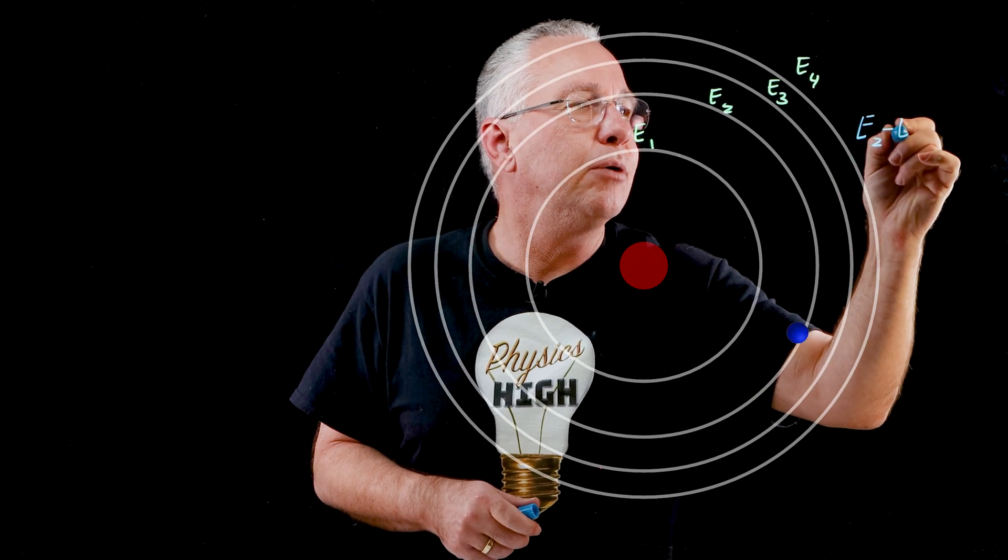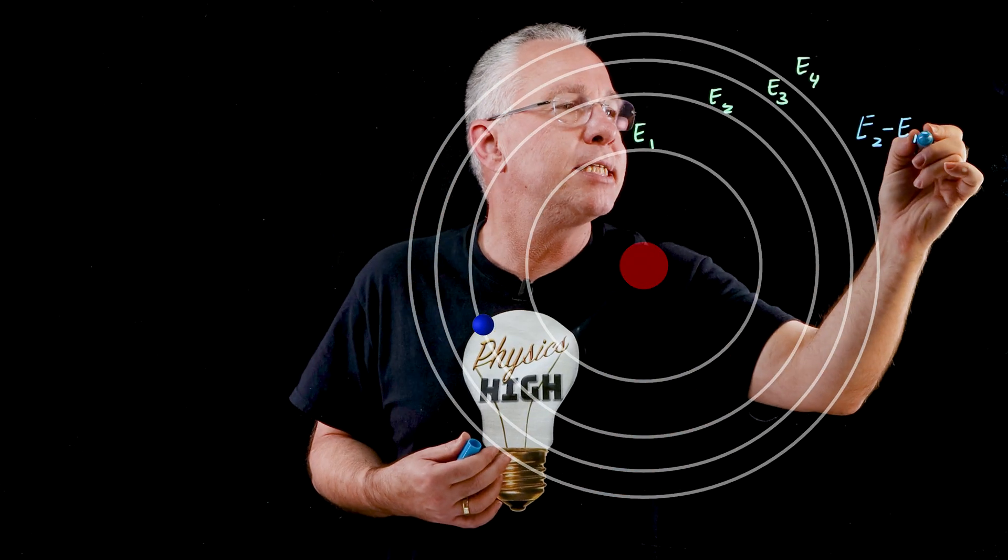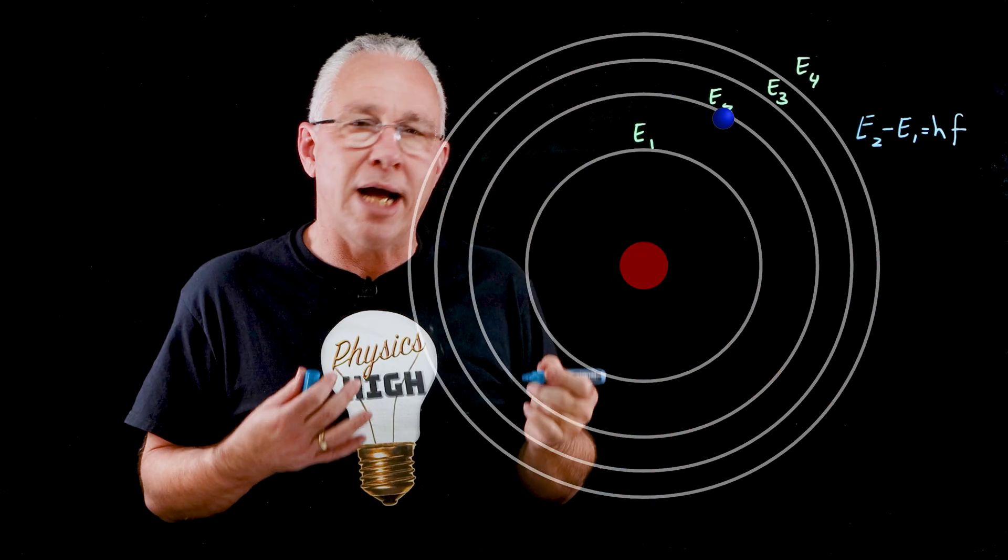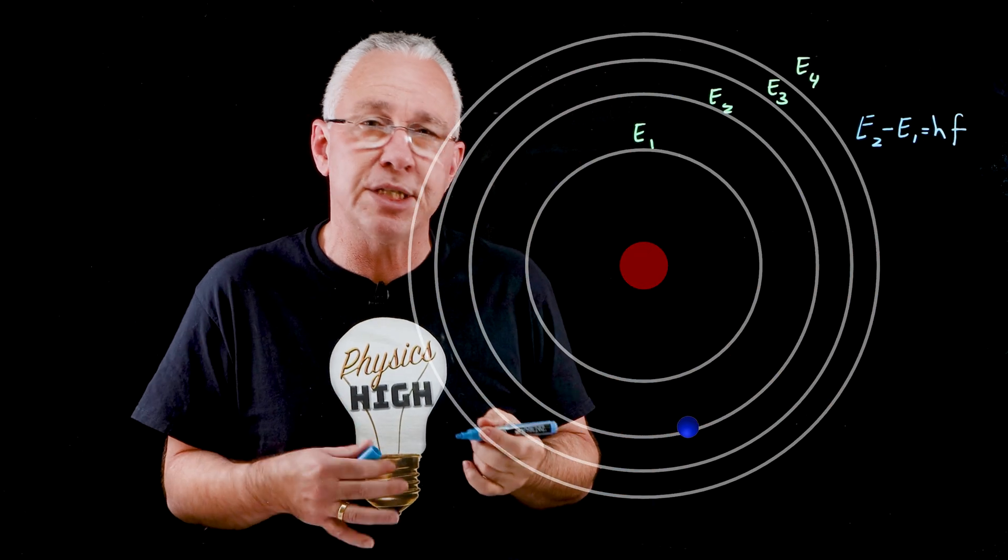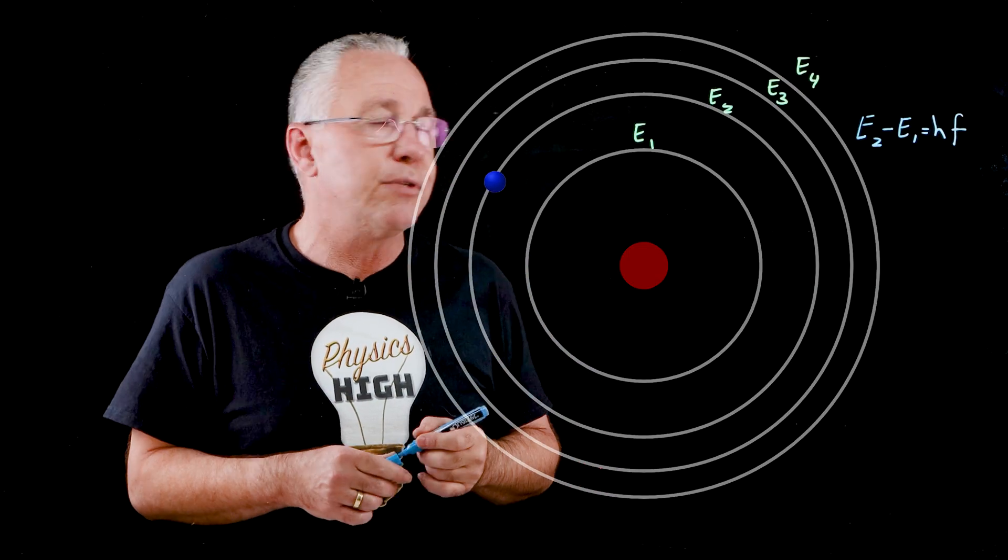E2 minus E1, Niels Bohr says well that is equal to hf, where f is a very specific frequency of the photon that the atom receives.